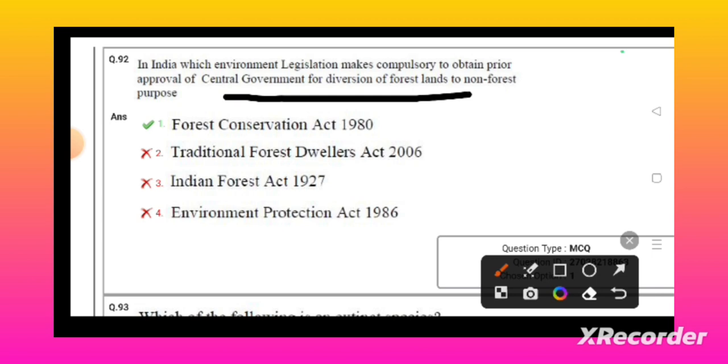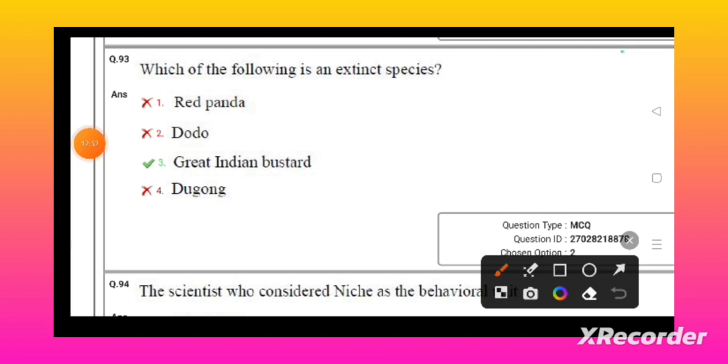Which of the following is an extinct species? Great Indian Bustard is not the extinct species. The dodo is the extinct species - they gave the wrong option.